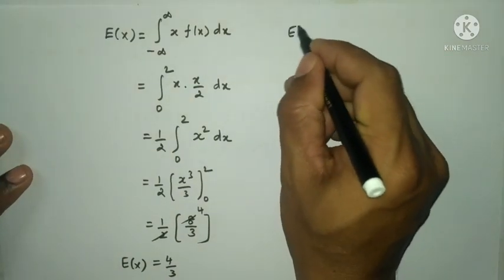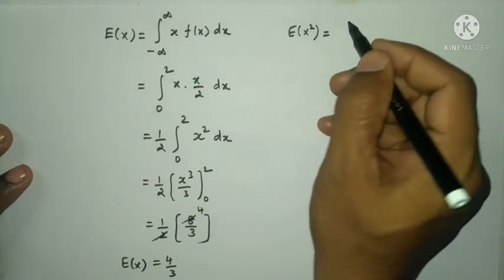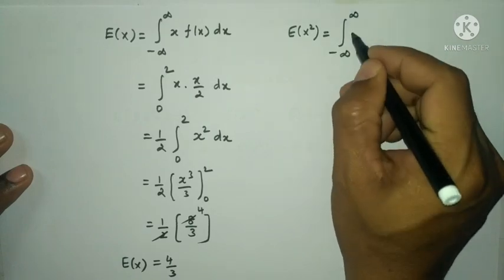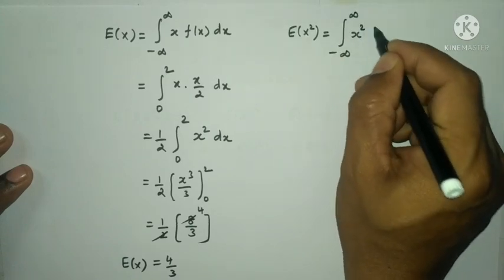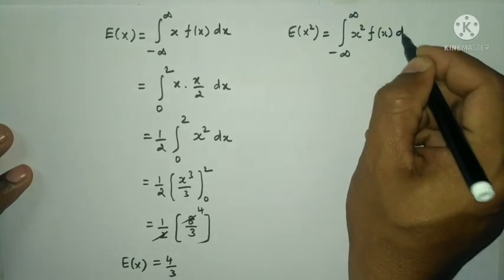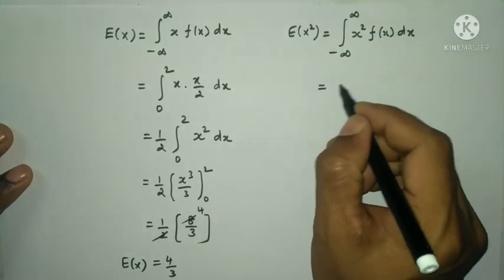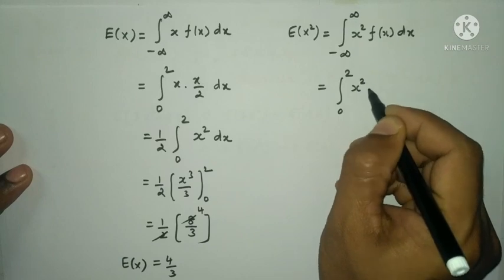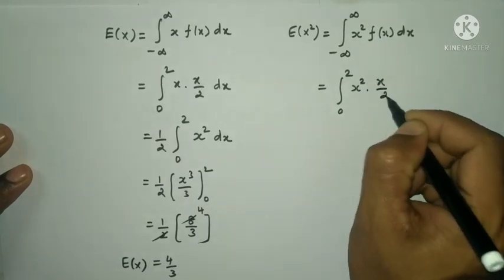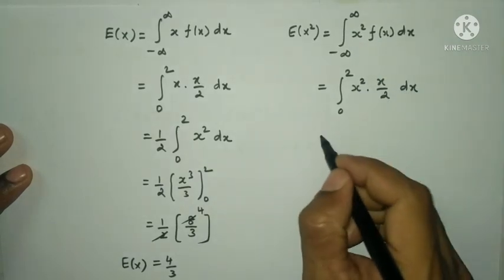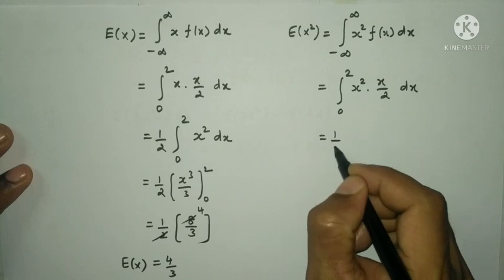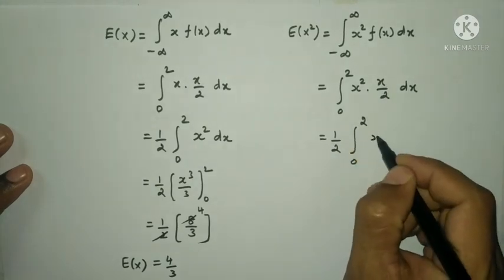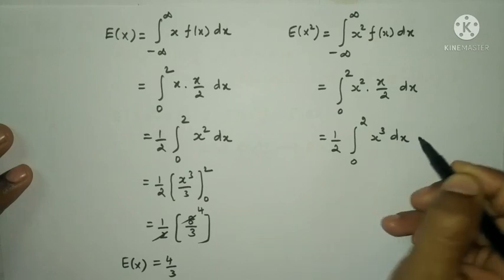Next, E(x²): by the formula, E(x²) = integral from minus infinity to plus infinity of x²·f(x) dx. With limits 0 to 2, this is integral from 0 to 2 of x²·(x/2) dx. Taking 1/2 outside, we get (1/2)·integral from 0 to 2 of x³ dx.